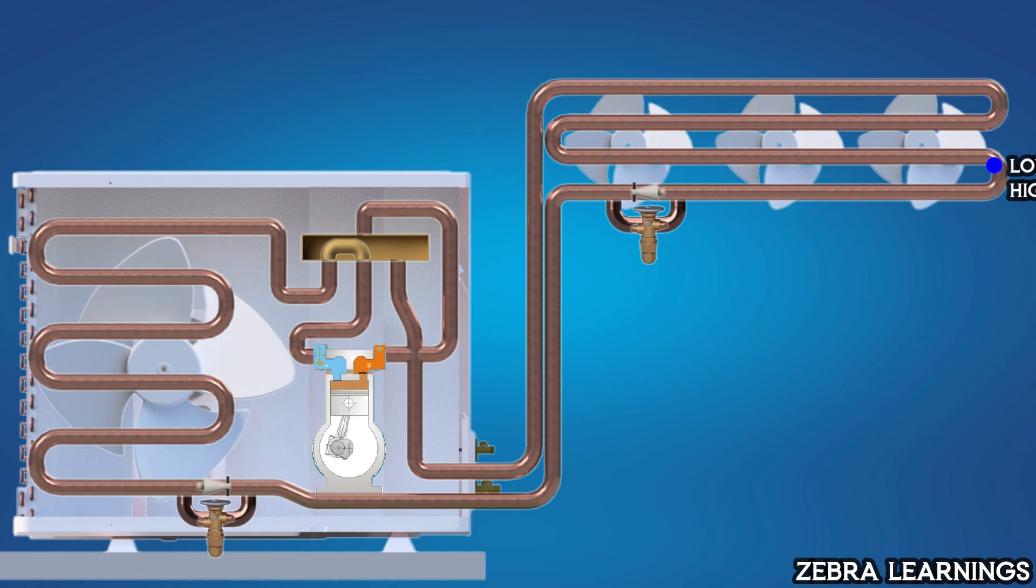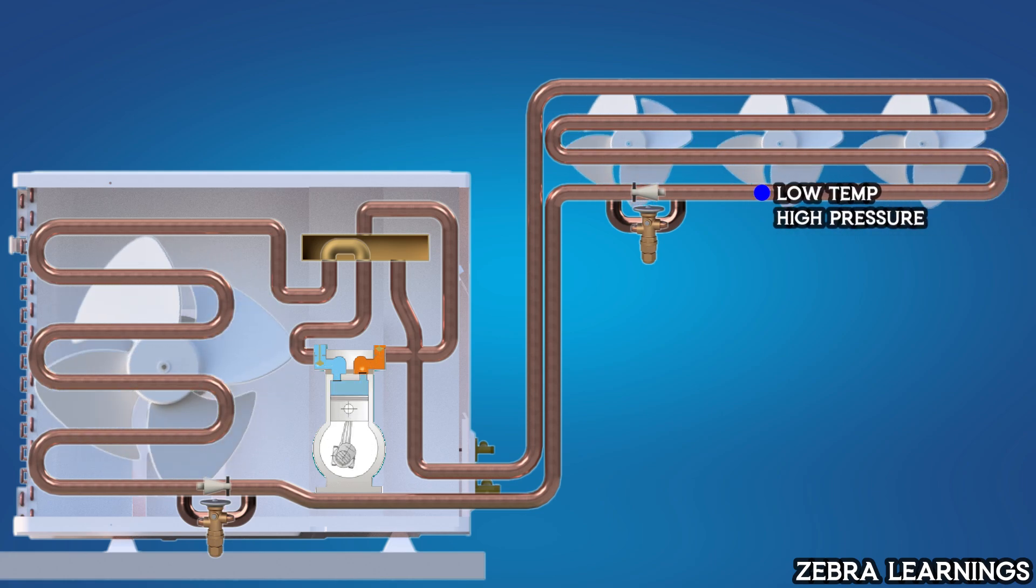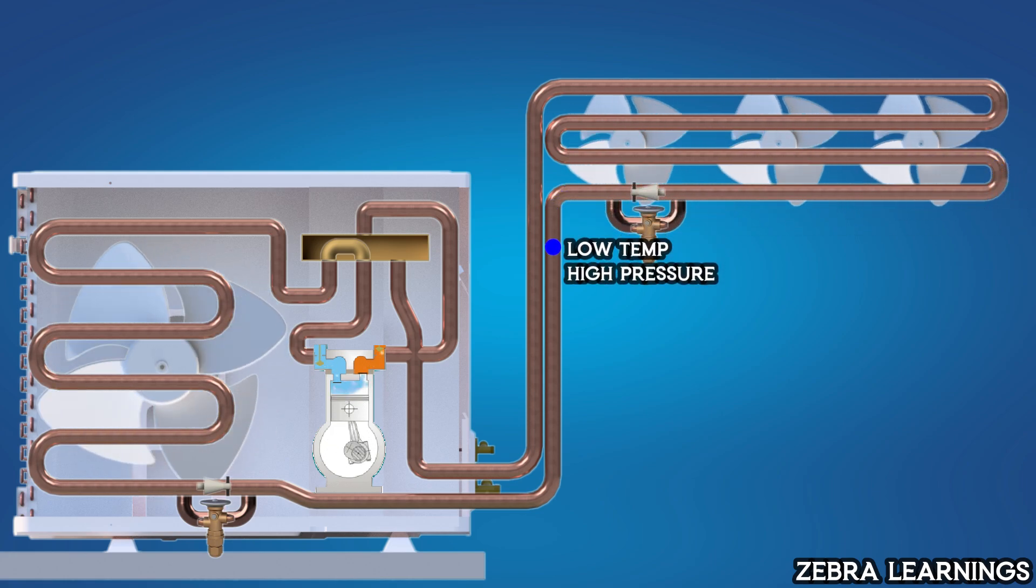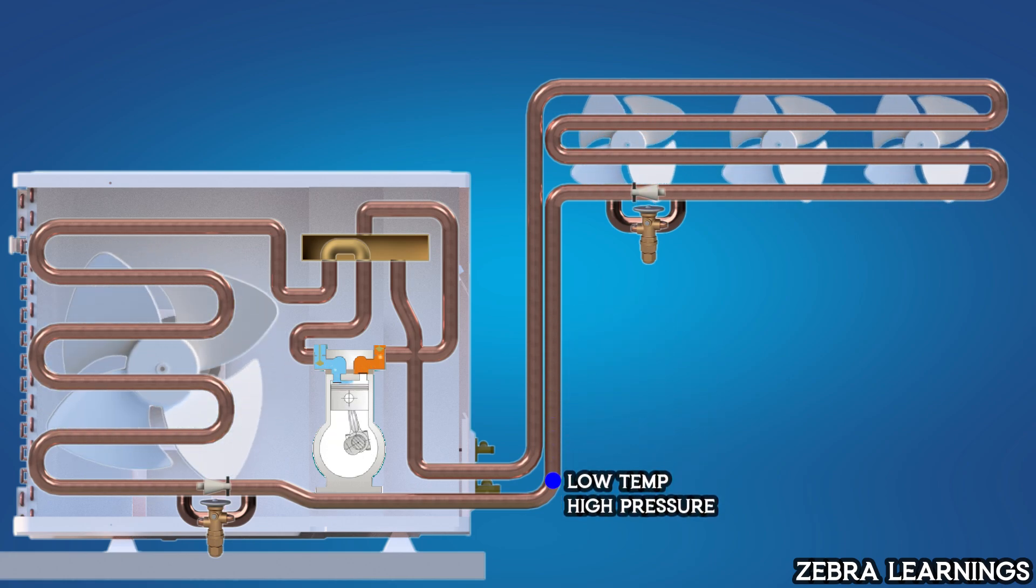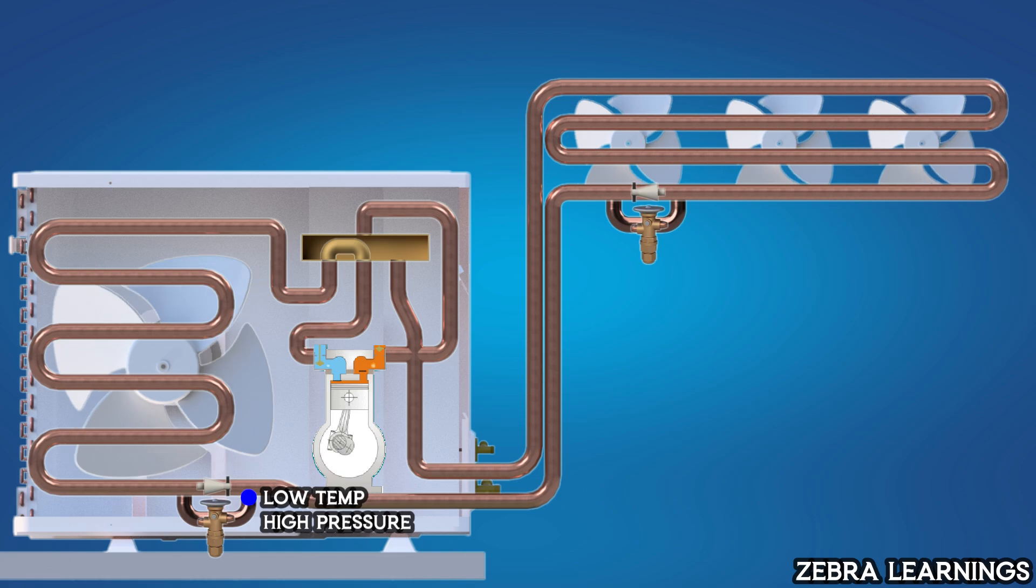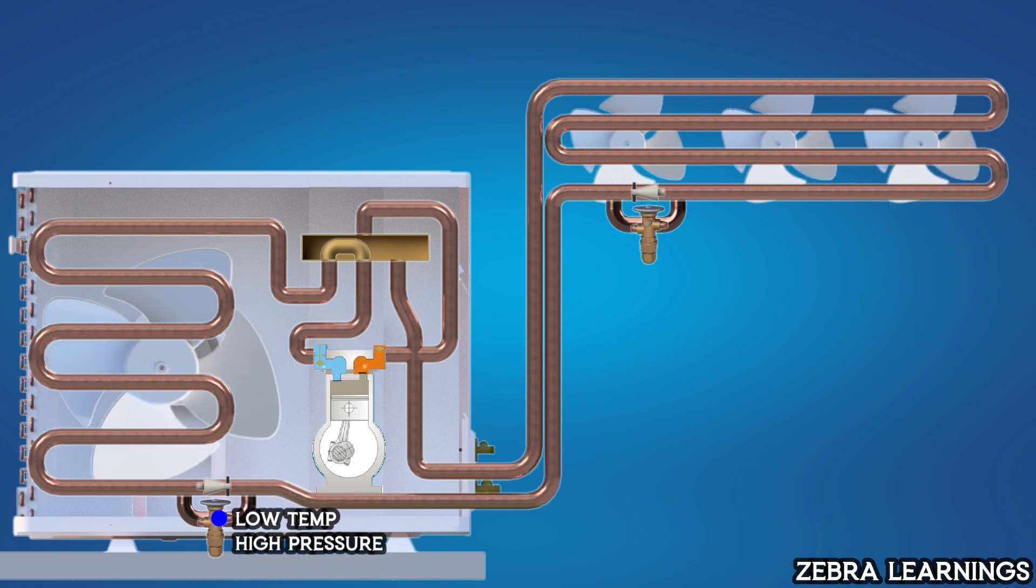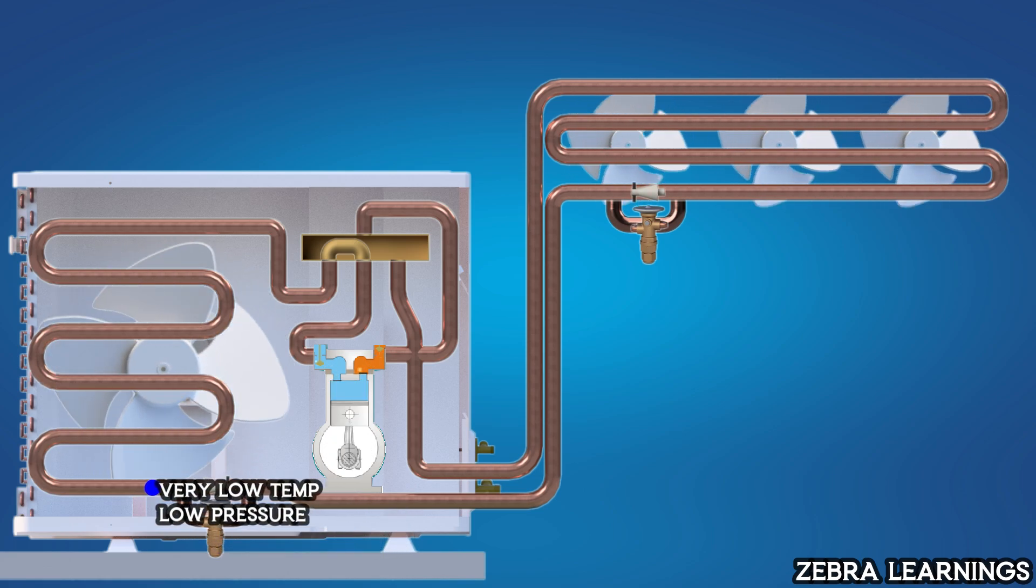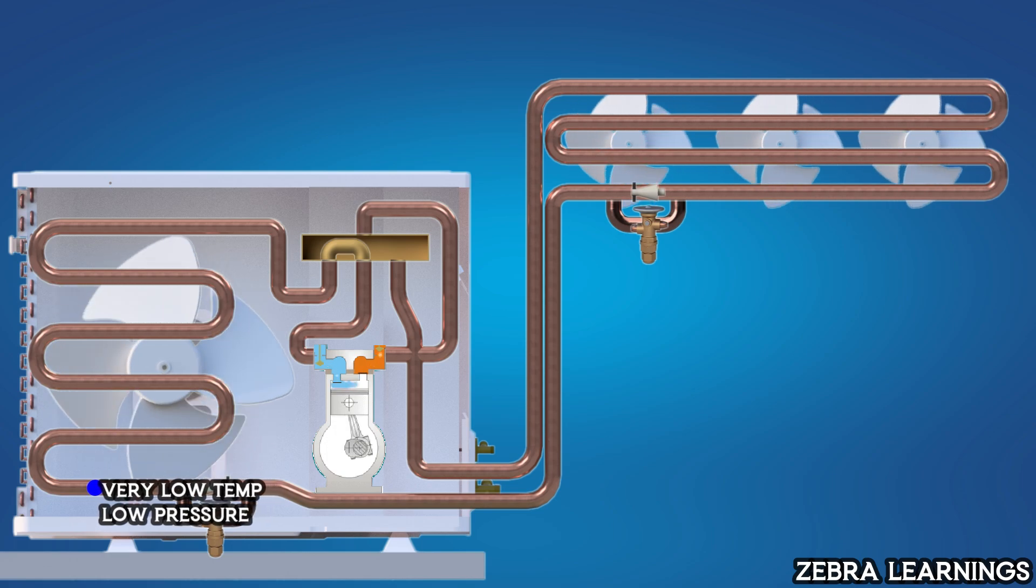The refrigerant, now at a lower temperature, flows through the non-return valve to the outdoor unit. Before entering the outdoor coil, the refrigerant passes through the expansion valve in the outdoor unit, causing its temperature to drop significantly and turning it into a liquid.